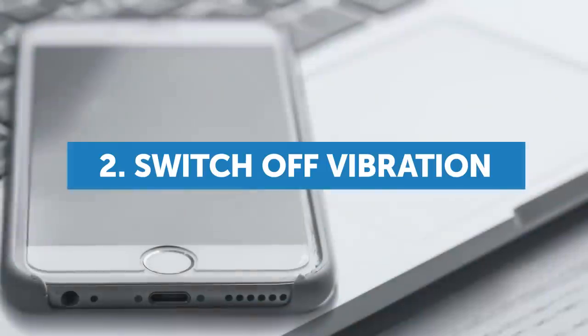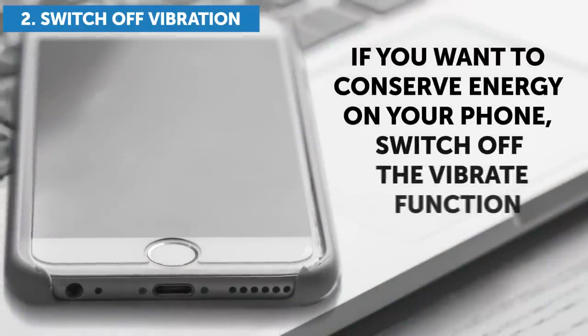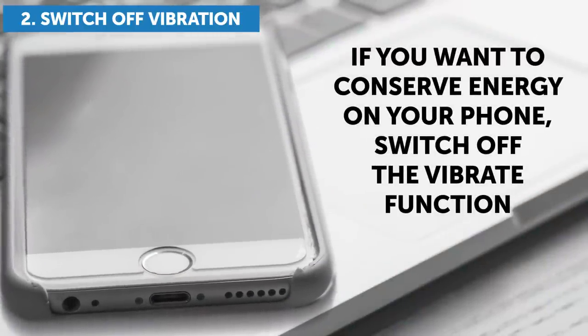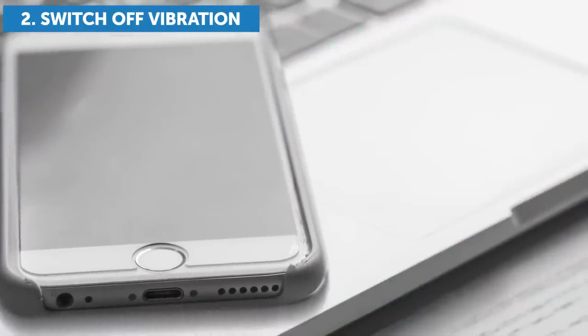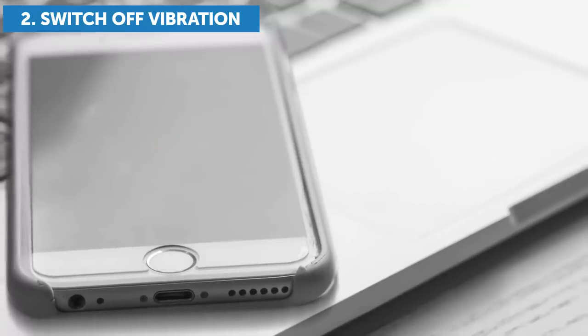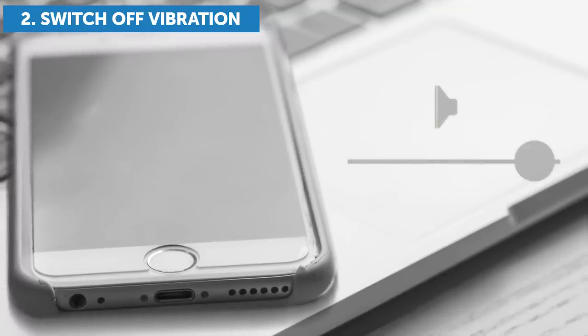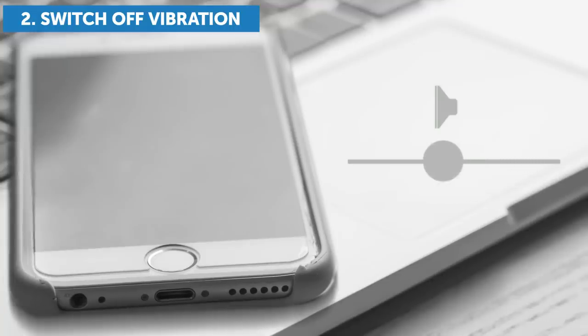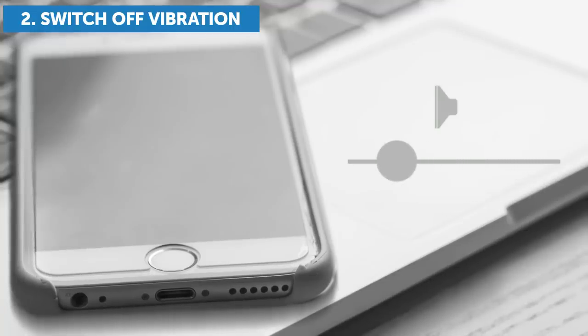2. Switch Off Vibration. If you want to conserve energy on your phone, switch off the vibrate function. The thing is that this option uses up your battery and, to be honest, you don't really need it. You can instead leave your phone on silent or use the ringtone setting with the volume turned down as low as possible.